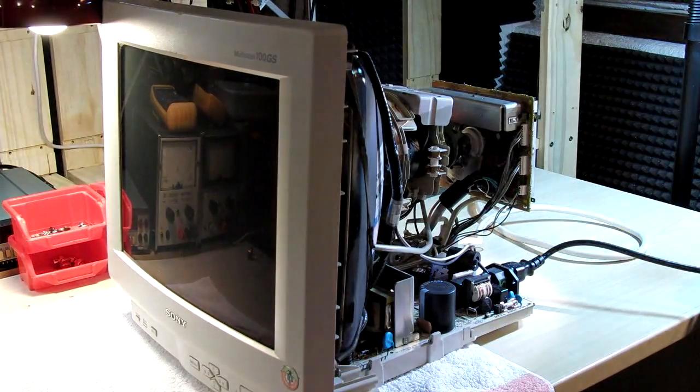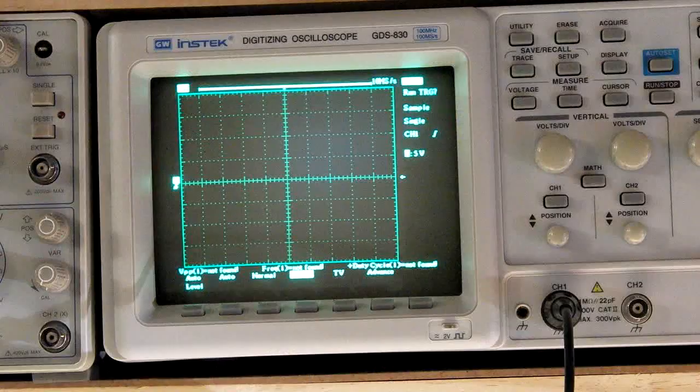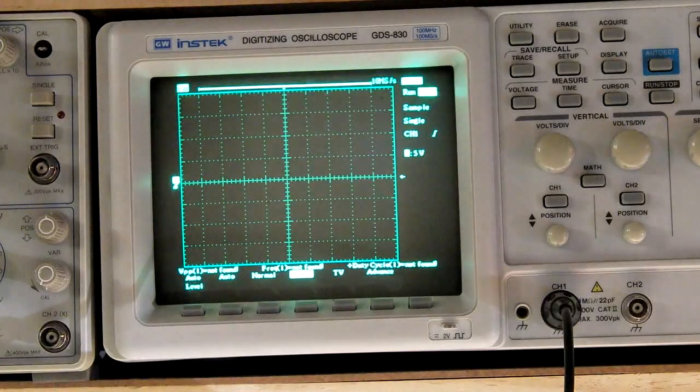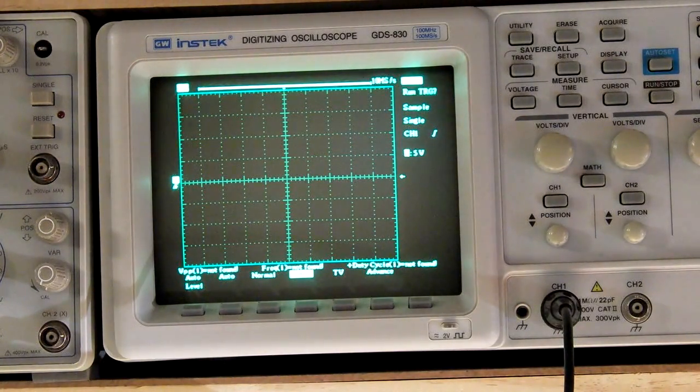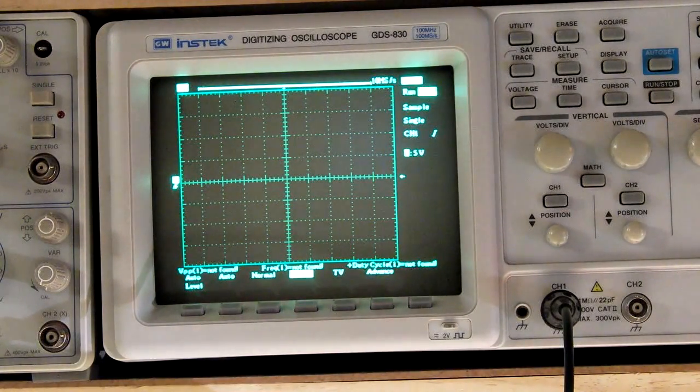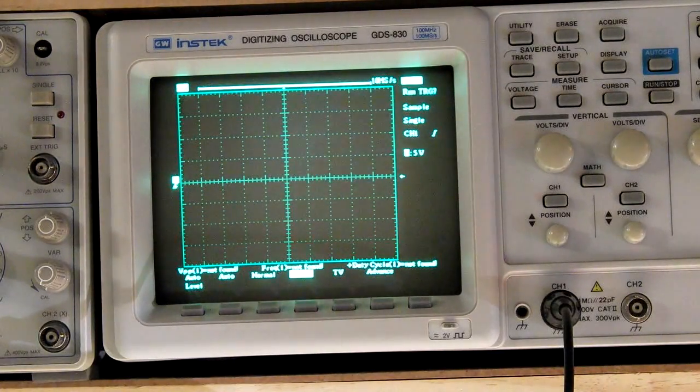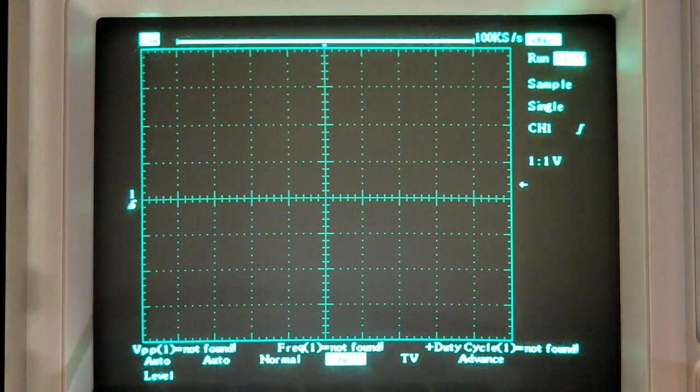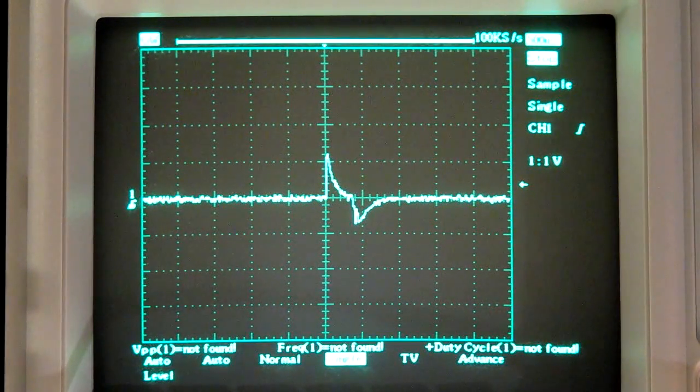So here we go. That's very cool. And here is the relay switching. So let's see this thing in action. I have a current probe attached to the coil, and the oscilloscope is in single mode. So let's see if I can capture something. And here we go.